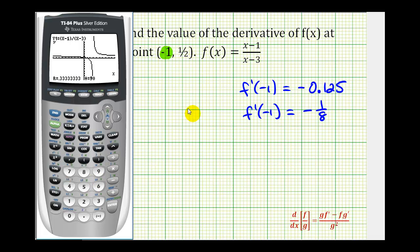And then we type in the x value, which is negative 1. And again, notice how it's giving us negative 0.125, which is equal to negative 1/8.